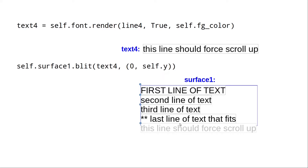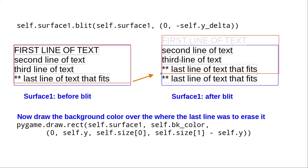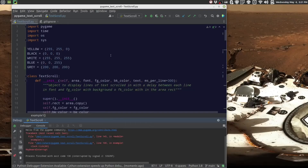When a line won't fit on the surface, you need to scroll everything up. The way you do that is you blit the whole surface1 onto itself, offset by negative delta, so all the text rolls up. The top line rolls off — anything outside the surface gets clipped. But the last line of text is still there since you copied everything up, so you need to erase it by drawing a filled rectangle in the background color over that last line.